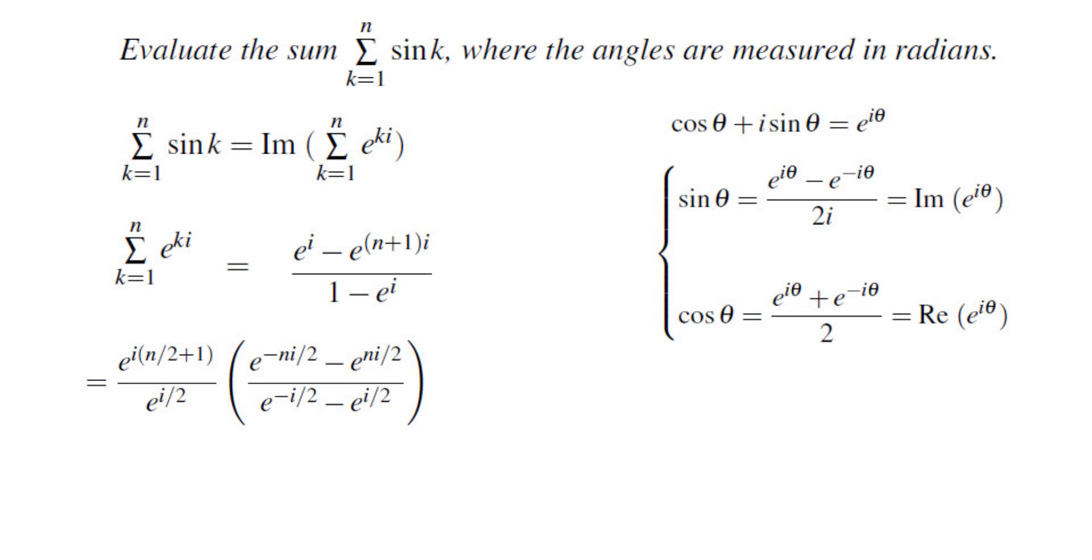That gives us e to the power of negative n i over 2 minus e to the power of n i over 2 in the numerator and e to the power of negative i over 2 minus e to the power of i over 2 in the denominator.